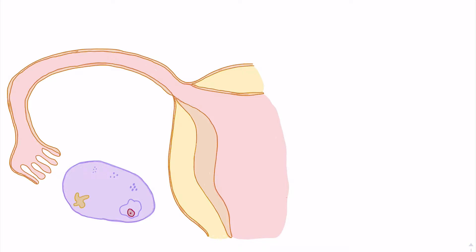We'll start with a review of the anatomy of the female reproductive system, including the ovaries, the fallopian tube, and the uterus. The uterus is a large cavity in which we see fetal development. Next is the endometrium, where blastocyst implantation occurs. We have the fundus at the top of the uterus and the uterine cavity, which is the large space within the uterus.